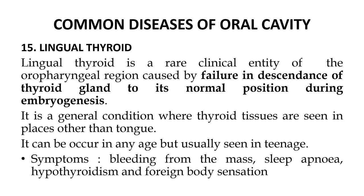Another common problem associated with the oral cavity is lingual thyroid. Lingual thyroid is a rare clinical entity of the oropharyngeal region caused by the failure of the thyroid gland to descend to its normal position during embryogenesis. It is a condition where thyroid tissue is seen in places other than the normal position. It can occur at any age but is usually seen in the teenage years. Symptoms include bleeding from the mass, sleep apnea, hypothyroidism and foreign body sensation.